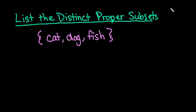Hi, for this video what I want to do is show you how to list the distinct proper subsets of a given set. So the set that we're given is cat, dog, and fish.